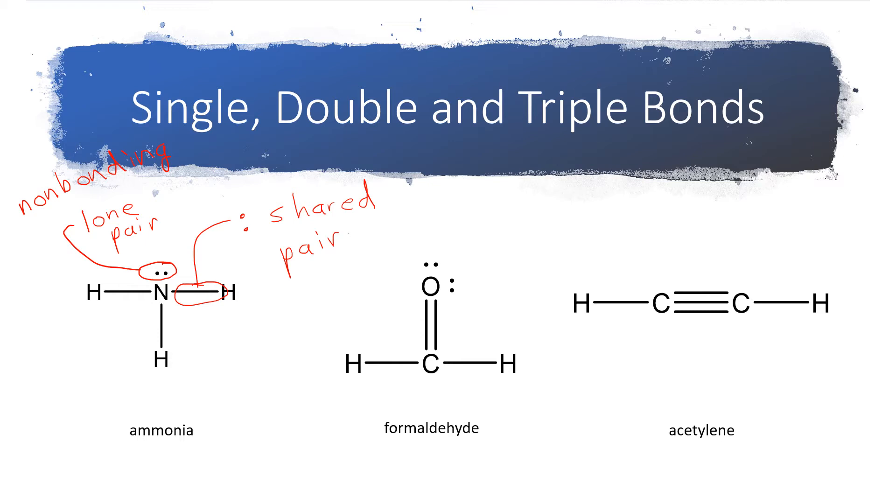If a single pair of electrons is shared, we're going to call that a single bond. So one shared pair makes what we call a single bond. Two electrons, one pair, that's a single bond.